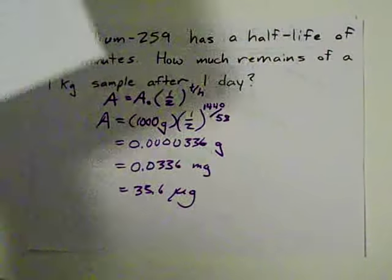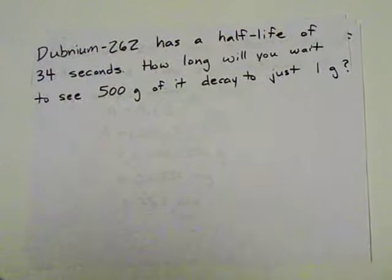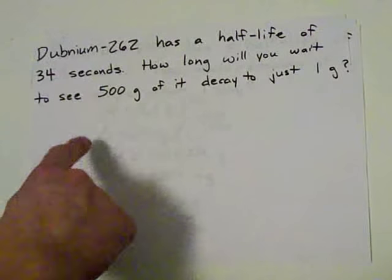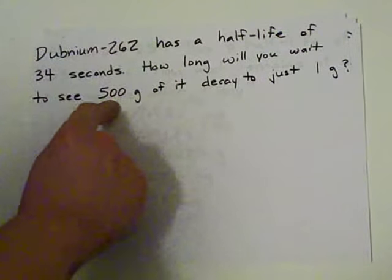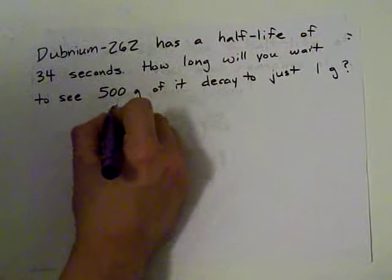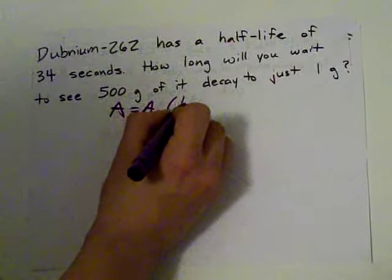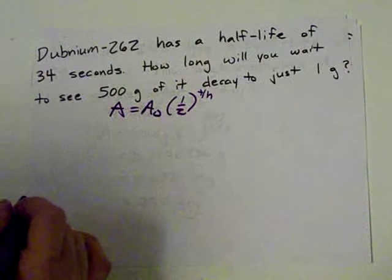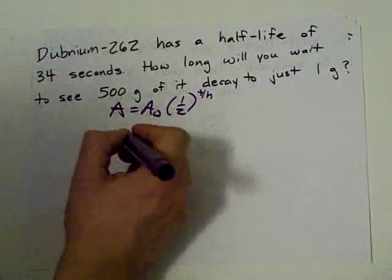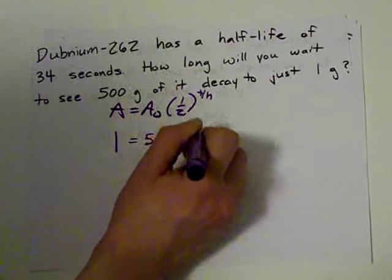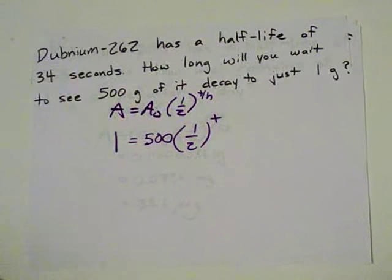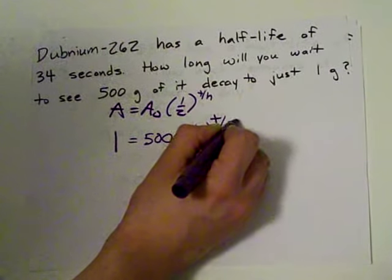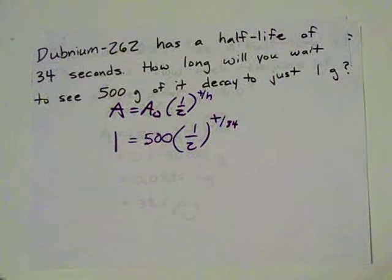Here's the other kind of question you could be given. Dubnium-262, given the half-life of 34 seconds. But this time, instead of asking you how much is left, it asks how long does it take to see 500 grams decay to 1 gram. Well, the amount remaining is the starting amount times a half to the power of t over h. We have 1 gram left, and we're starting with 500 grams. One half to the power of, we don't know how much time has gone by. What we do know is that the half-life is 34 seconds. And I want you to solve this for the amount of time.